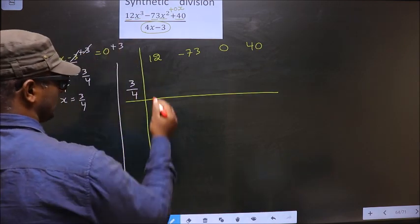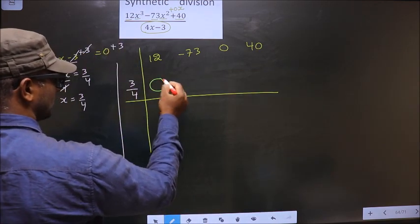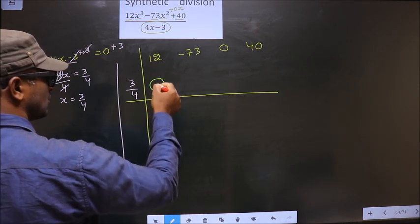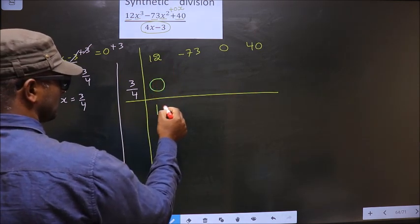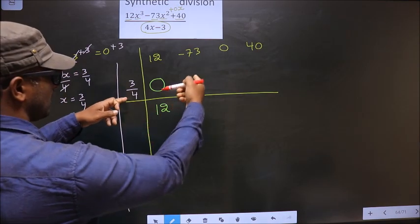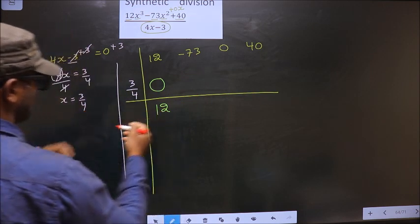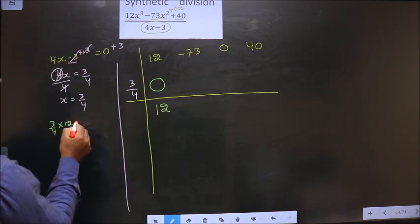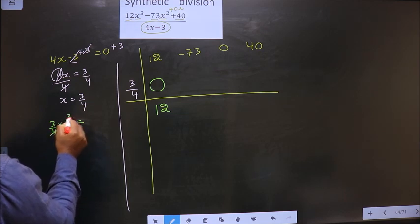Now we start by placing 0 here. So you put 0 here. Now add these 2. 12 plus 0 is 12. Now you should multiply these 2 and write here. So multiply 3 by 4 into 12.